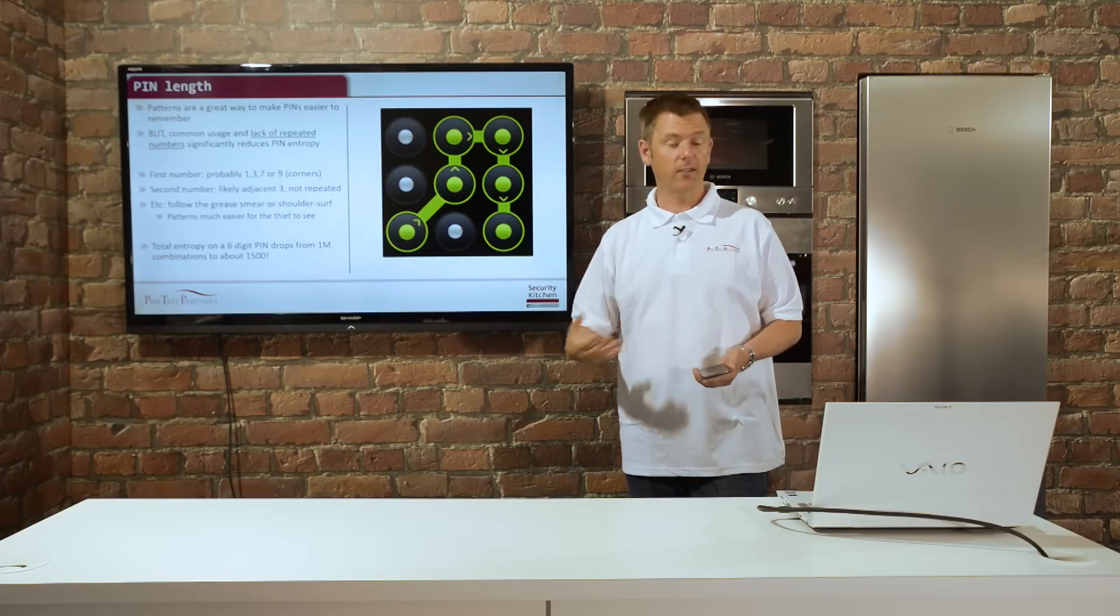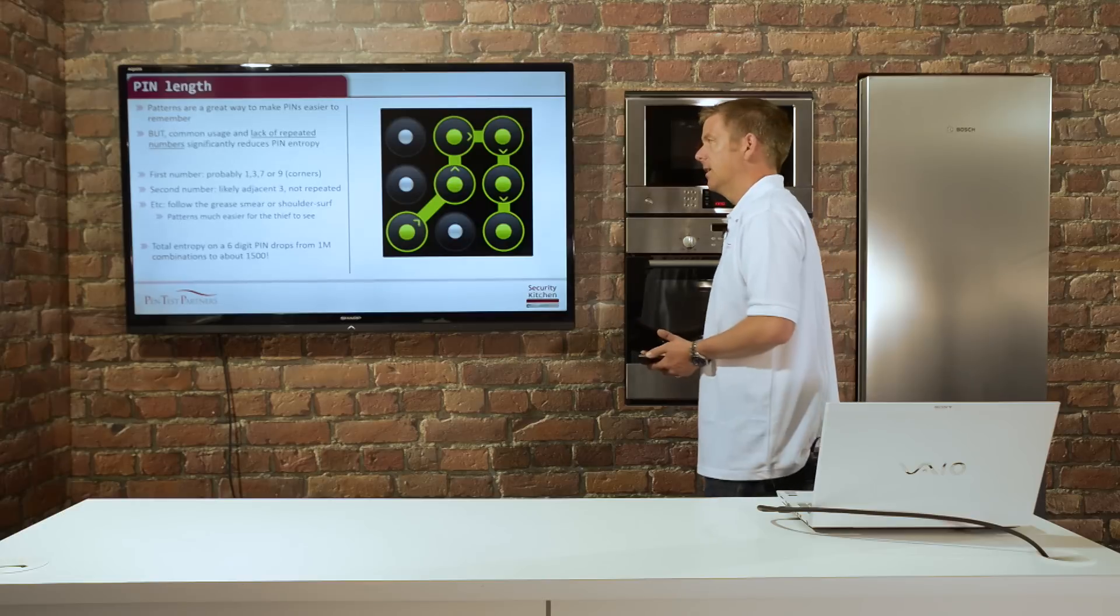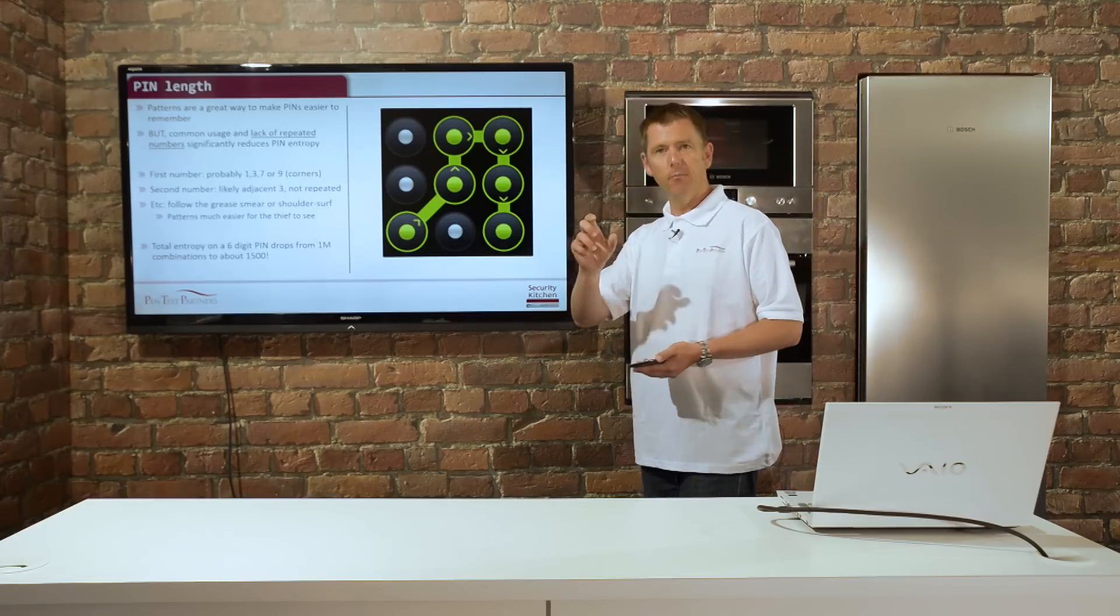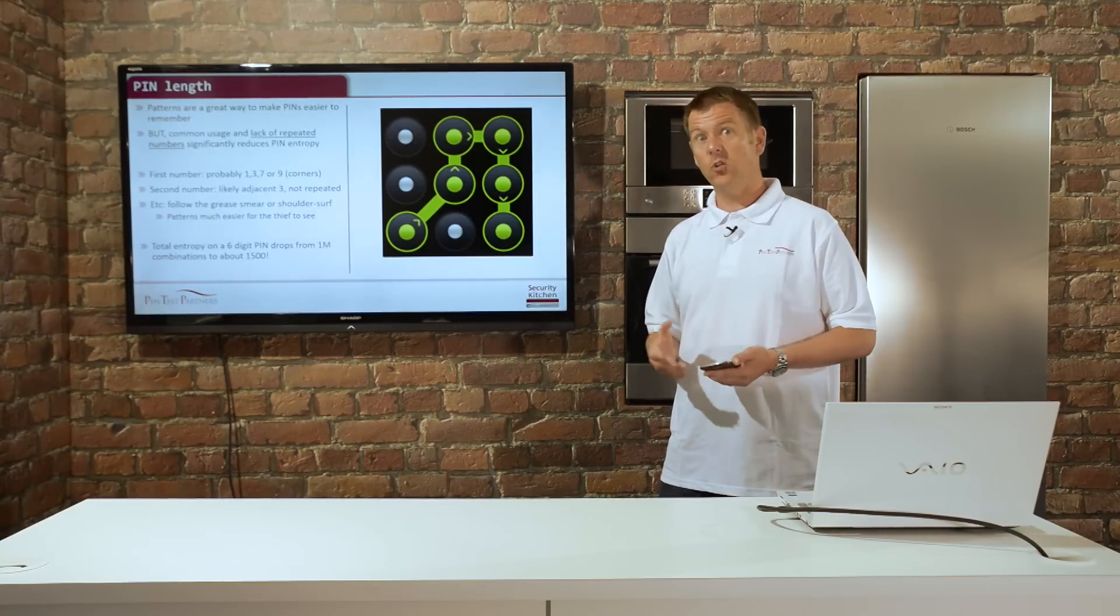And as a result of that, whilst you might have a fantastic, say, six-digit pin that's got potentially a million combinations, because of standard usage, moving to particular numbers and the fact you can't jump around easily, it makes the entropy of the pin much shorter.